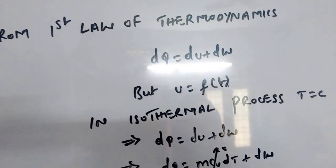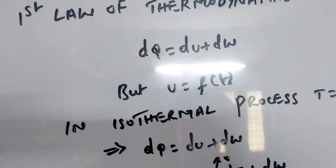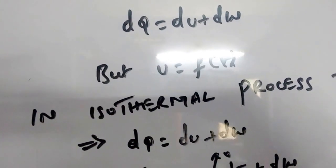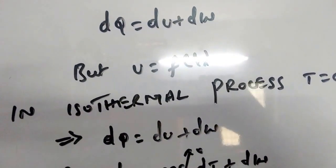As we all know, this internal energy is a function of temperature, that is, u is a function of temperature. In an isothermal process, this temperature is equal to constant.